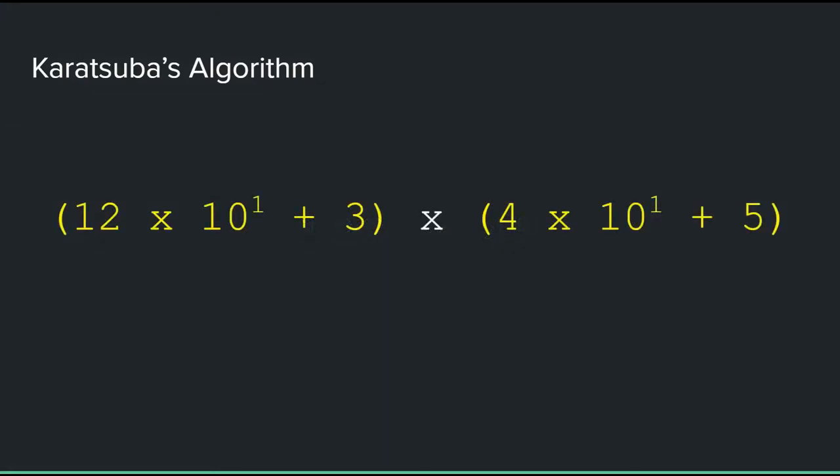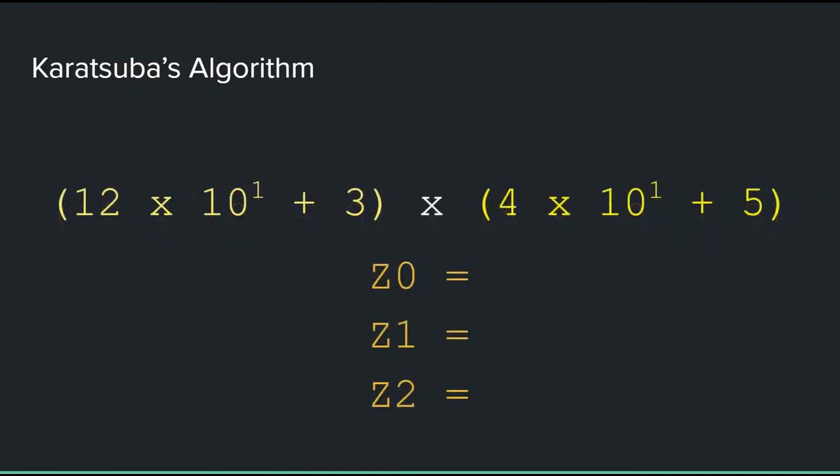First, split the two so they are in this form. Here is the 123 and here is the 45. Each number is split into two parts and the first factor is multiplied by the same base to the same power. Now, all you need to do is to fill out these three numbers.